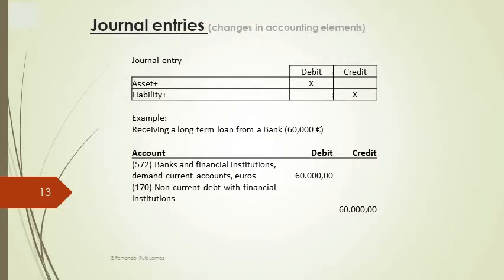In this example of a journal entry, we show a transaction which implies an increase in a liability as a counterpart of an increase in an asset. The transaction consists of contracting a long-term borrowing from a bank, by which we collect €60,000 at the date of the journal entry.